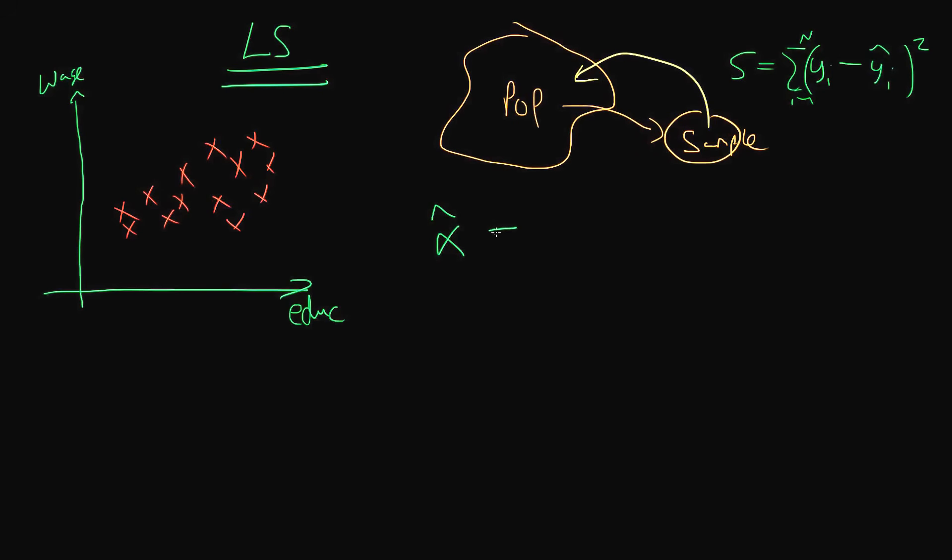If we sort of went through and solved the whole thing, alpha hat is equal to Y bar minus beta hat times X bar, where X bar and Y bar are sample means, and beta hat is equal to the covariance of Xi and Yi over the variance of Xi.